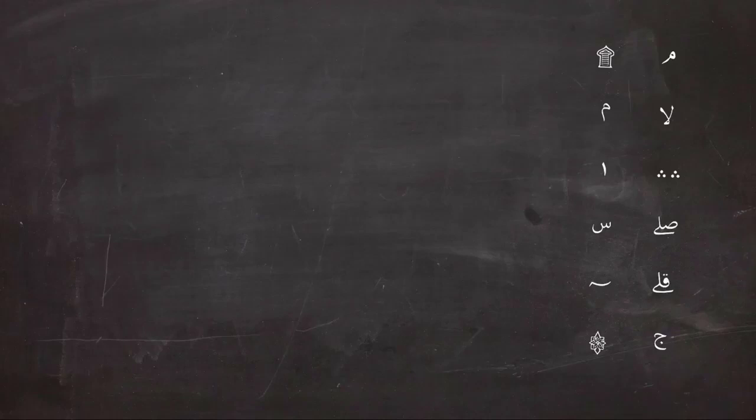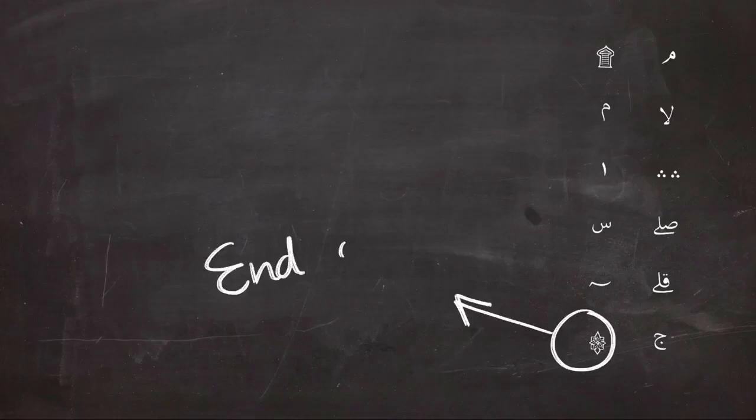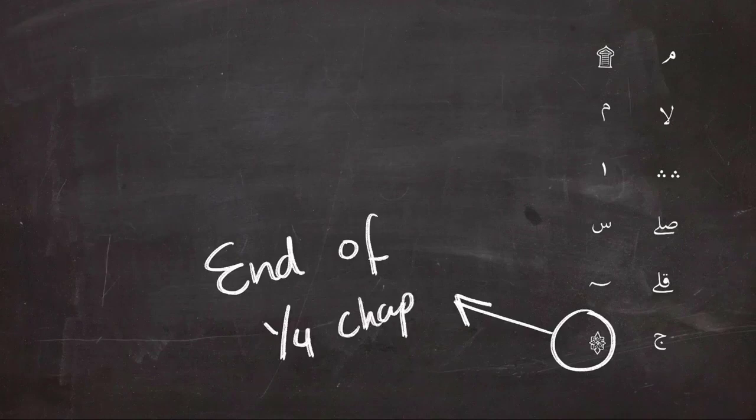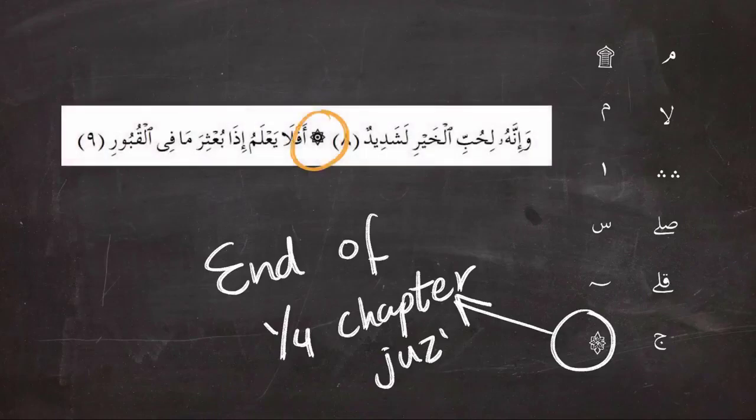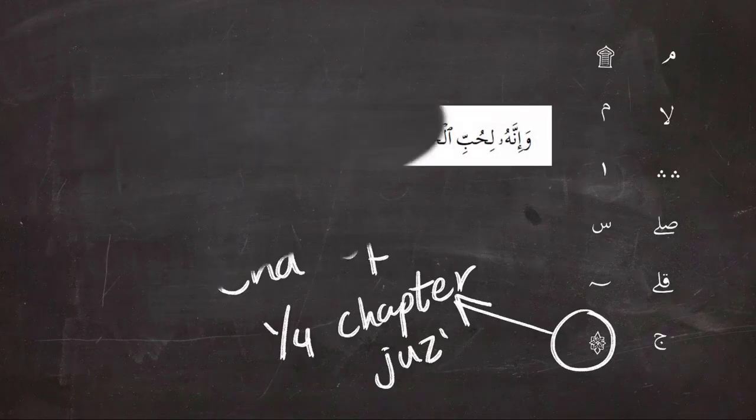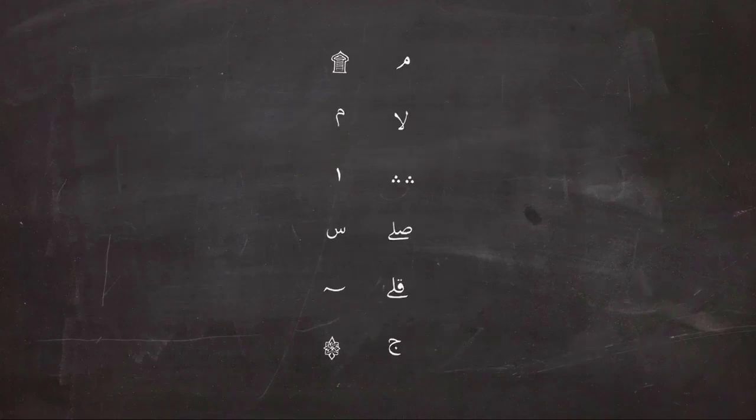The last sign that we're going to talk about today is the sign of the end of the quarter of the chapter or juz. The juz is divided into eight quarters, and at the end of each quarter you are going to see this sign. It doesn't involve any change in pronunciation and doesn't affect anything of what you say whatsoever. It is just for the division of the Quran.